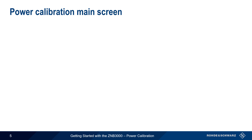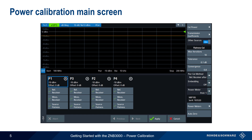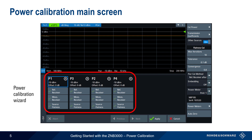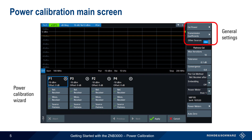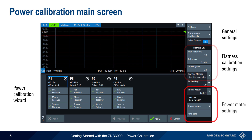The Power Calibration main screen consists of several areas: the Power Calibration Wizard, General Settings, Flatness Calibration Settings, and Power Meter Settings. Since source or reference receiver calibration requires the use of a power meter, let's start with Power Meter Settings.